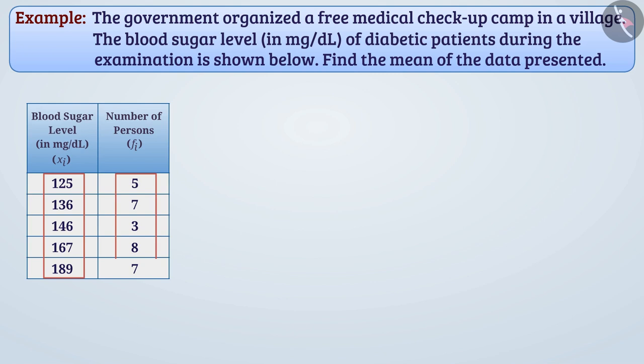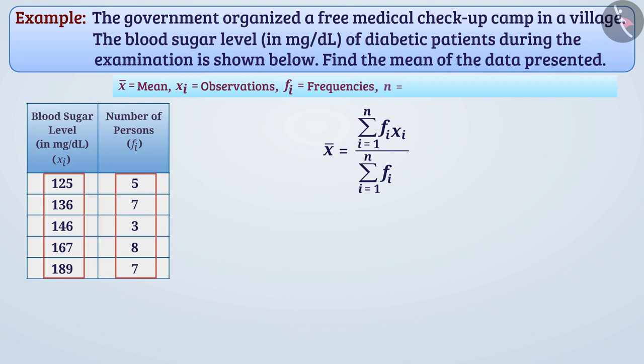So we should use this formula to get mean. Here X bar is mean, X_i is observations, f_i is frequencies, and n is the number of entries in the table. Here n is equal to 5.